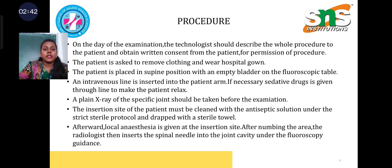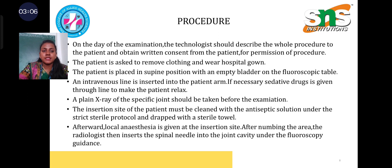On the day of examination, the technologist should describe the whole procedure to the patient and obtain written consent for permission. The patient is asked to remove clothing and wear a hospital gown. The patient is placed in supine position with an empty bladder on the fluoroscopic table. An intravenous line is inserted into the patient's arm, and if necessary, sedative drugs are given through the line to make the patient relax. A plain x-ray of the specific joint should be taken before the examination.